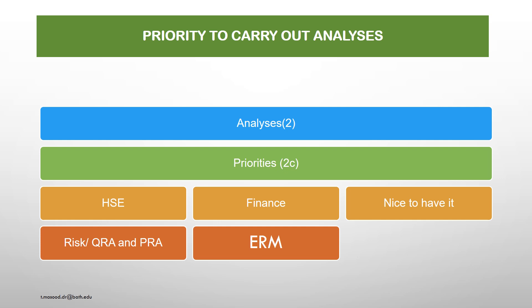I am going to discuss first, HSE — health, safety, environment — the risk to carry out quantitative risk analysis and process-related assessment, and set a mitigation plan and control mechanism. Second, finance — ERM, enterprise risk management system — to determine risk which may lead to revenue loss and address these issues with precision. The next is 'nice to have,' which is not a high priority.